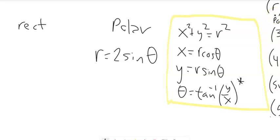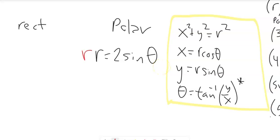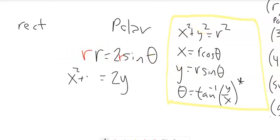For r = 2·sin(θ): the sine theta alone doesn't help — I need r·sin(θ) to get y, and I want r² for x² + y². Instead of squaring, multiply both sides by r: r² = 2·r·sin(θ). Now r·sin(θ) = y and r² = x² + y², so x² + y² = 2y. That's in rectangular with no r's or thetas.